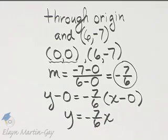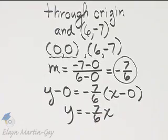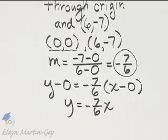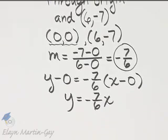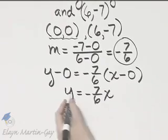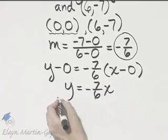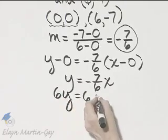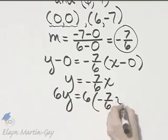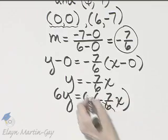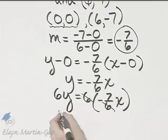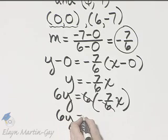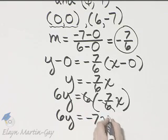I believe we were asked to write this in standard form. I'm going to go ahead and multiply both sides by 6 so I no longer have a fraction there. If I multiply the left side by 6, I have 6y. And if I multiply the right side by 6, look what happens. The 6's divide out. So I have 6y is equal to negative 7x.